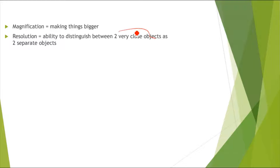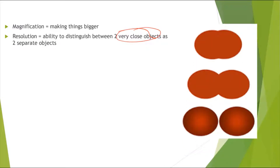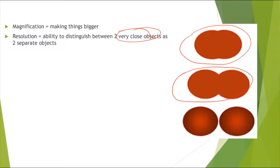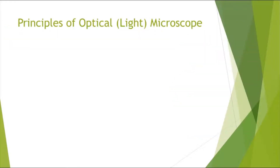For example, the objects are meant to be two separate objects, but in one case they're seen as one object together — that would be very low resolution. Somewhat better resolution allows partial distinction, but the best resolution shows you the two very close objects as two clearly separate objects.